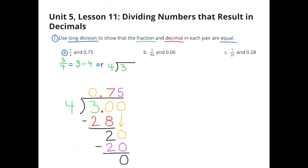Then I put another yellow 0 and brought that 0 down next to the 2 to make 20 hundredths. How many times does 4 go into 20? 5. 5 times 4 is 20, and 20 minus 20 gives a remainder of 0. So 3 divided by 4 is 75 hundredths.